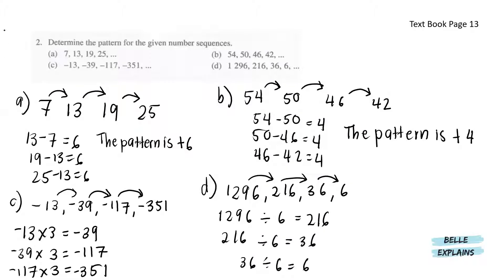Next, determine the pattern for the given number sequences. I've already done it here for A: 7, 13, 19 and 25. In order to know the pattern in between, you have to minus the numbers. 13 minus 7 gives you 6. 19 minus 13 gives you 6. And 25 minus 19 gives you 6. So we know that the pattern is plus 6.